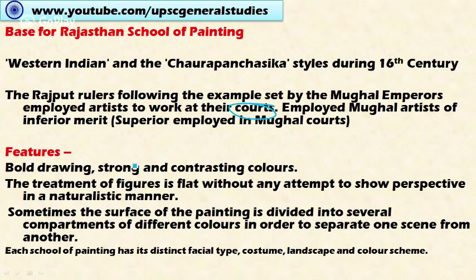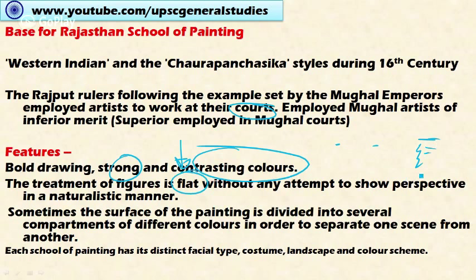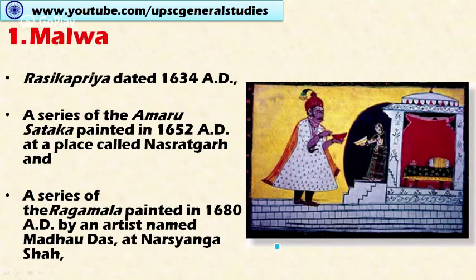The important features of Rajput paintings are: they are bold and strong, using highly contrasting colors that are harsher compared to Mughal painting. The treatment of figures is flat — there is no three-dimensional perspective; figures appear in only two dimensions without any attempt at naturalistic perspective. Sometimes the surface of the painting is divided into several compartments of different colors to separate one scene from another. Each school has its own distinct facial type, costume, landscape, and color scheme influenced by local conditions.